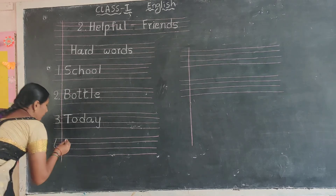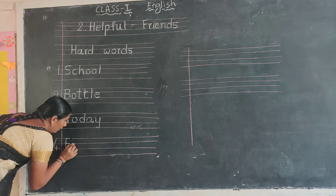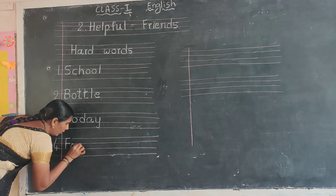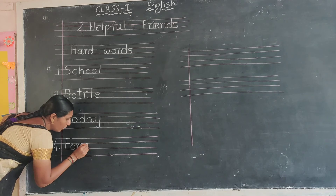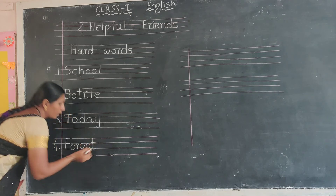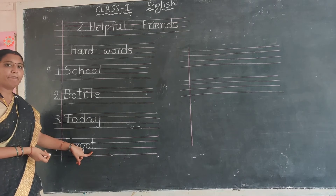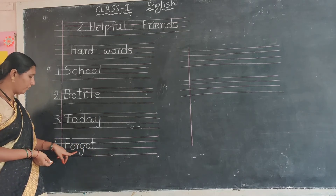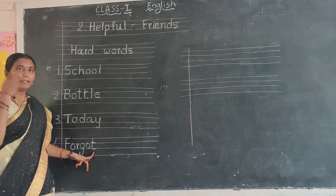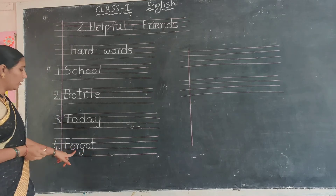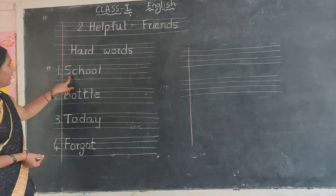Number four in the margin. Capital letter F. F-O-R-G-O-T. Forgot. F-O-R-G-O-T. Forgot. F-O-R-G-O-T. Forgot.